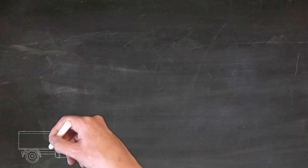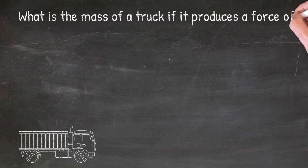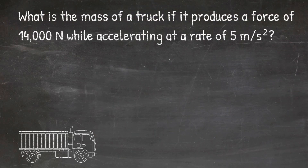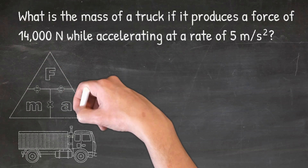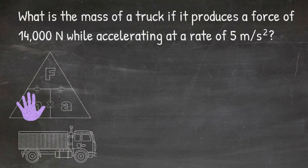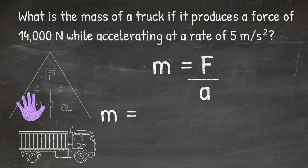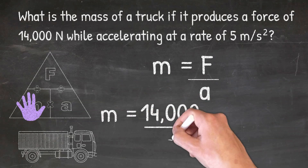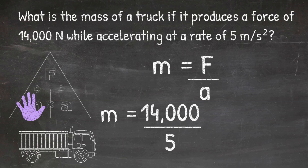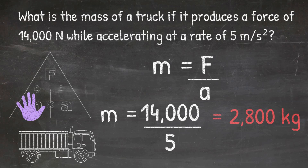In our second problem, the question says: what is the mass of a truck if it produces a force of 14,000 Newtons while accelerating at a rate of 5 meters per second squared? I need to cover up the letter M in my triangle, which tells me to do force divided by acceleration. So I take 14,000 Newtons divided by 5 meters per second squared, and that gives me a final answer of 2,800 kilograms.